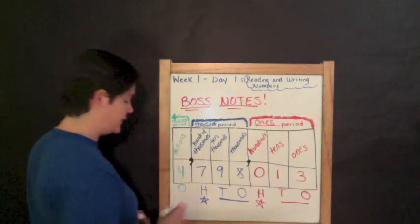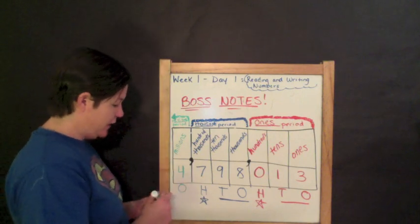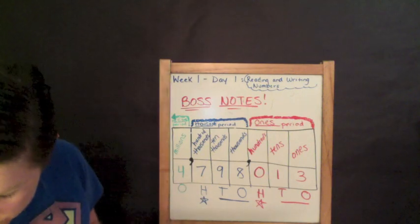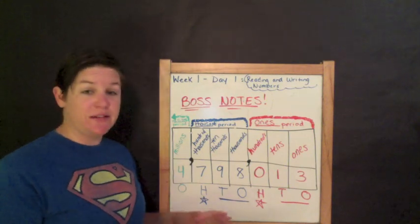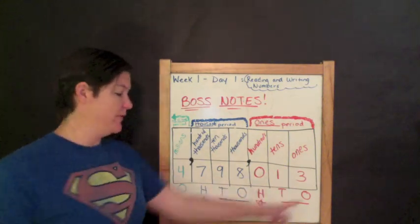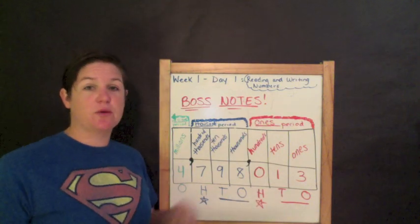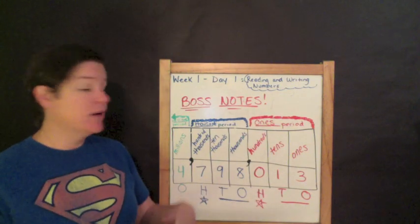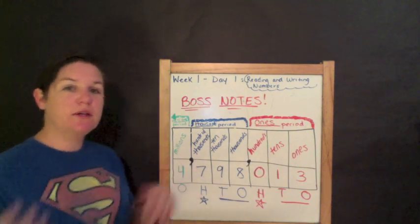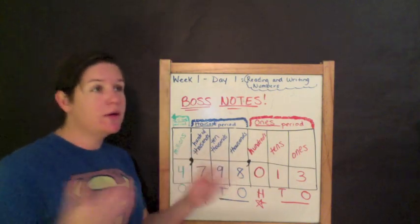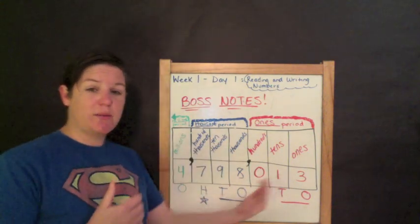And then we move into the millions place — this would be the one millions place. You'll notice a pattern: O, T, H, O, T, H, O, T, H. So it's one thousand, ten thousand, hundred thousand, one million, ten million, hundred million, one billion, ten billion, hundred billion. You'll see the pattern with that.